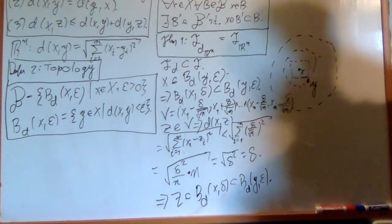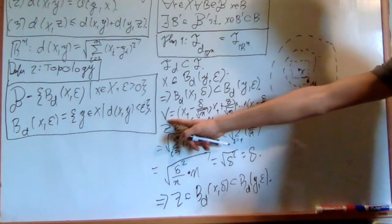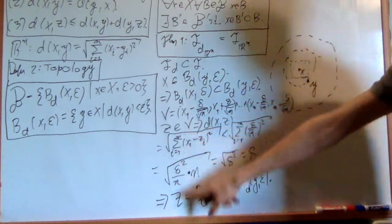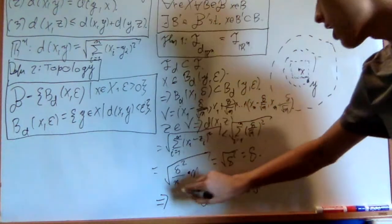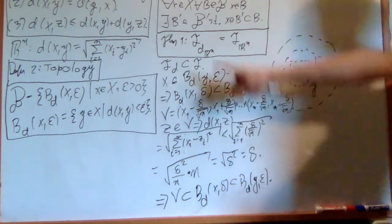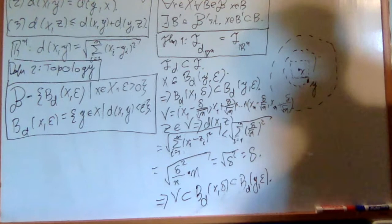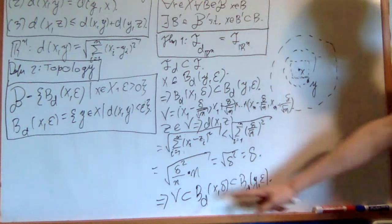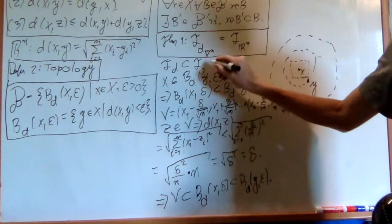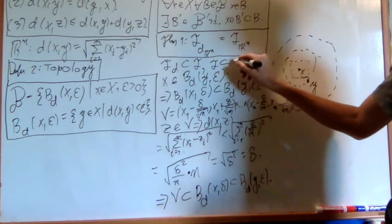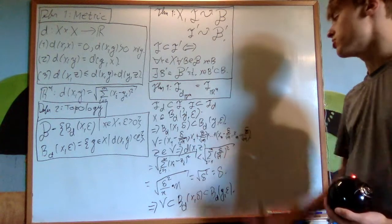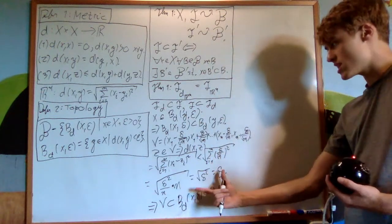What I just proved is that V is a subset of the ball B_d, because if z is in V then z is in the ball. That means it satisfies the condition: I found a basis element in the product topology that is a subset of the metric basis element. Now all you have to do is show that the product topology is a subset of the metric topology. I'll leave that part of the proof to you — it uses something similar but in reverse.